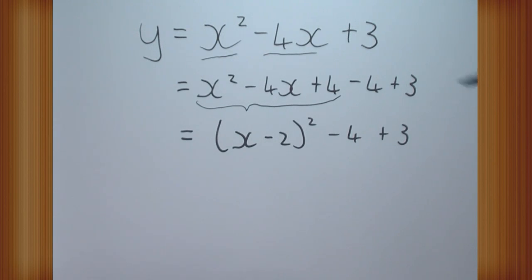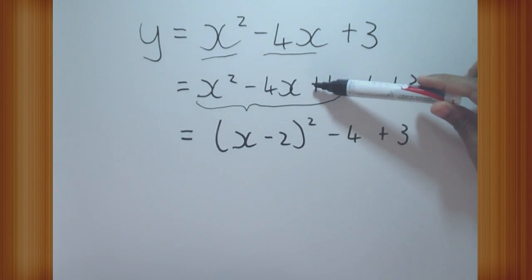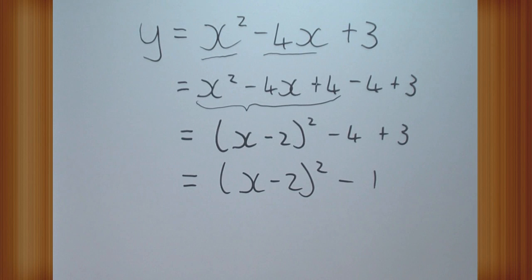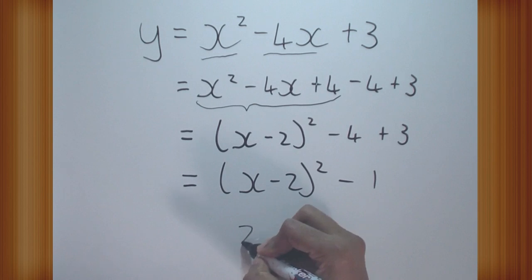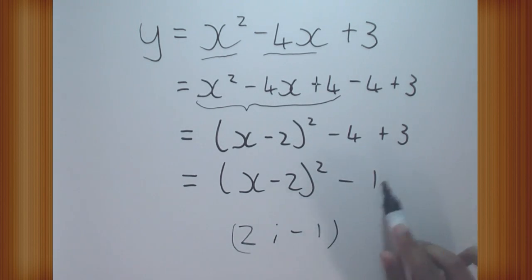When we add and subtract our constant, the positive version is always going to be factorized into the squared bracket, because to make a squared bracket we need a positive number here — the positive as the last number means the two brackets will have the same sign, and to have them identical they have to have the same sign. We have the minus on the outside. Adding minus 4 and plus 3 together gives me minus 1. So we end up with x minus 2 squared minus 1. This is now in the correct format from completing the square, giving a turning point of 2 and minus 1. The x minus 2 gives a positive 2, and the minus 1 stays minus 1.